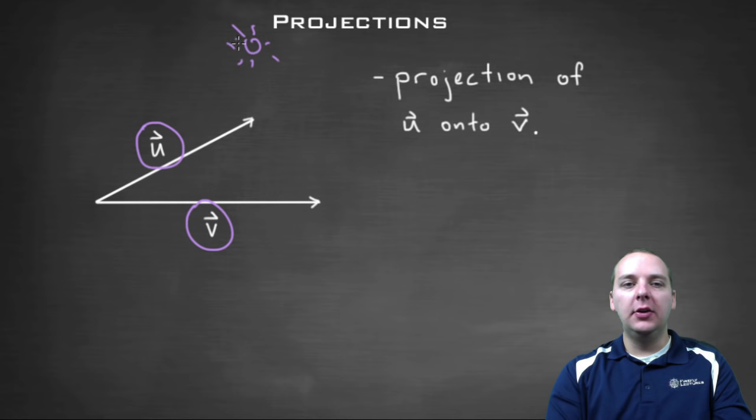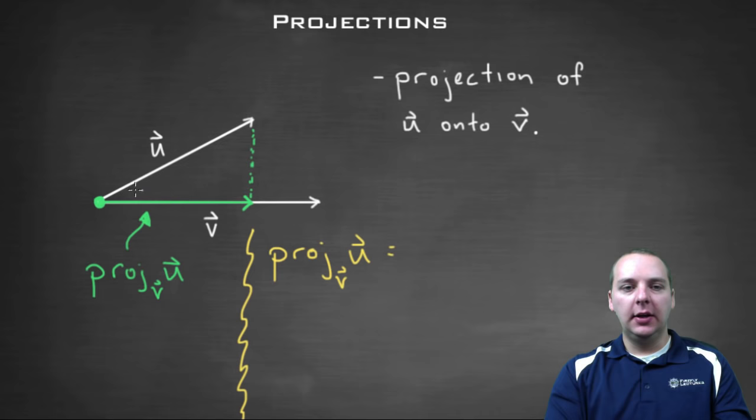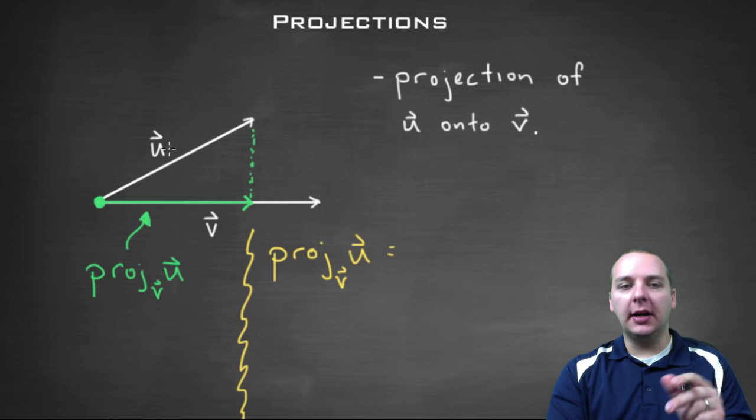do you notice how there would be a shadow that u leaves on v? So if you projected u onto v, it would wind up looking something kind of like this. Let me get rid of all these purple lines. It would look something kind of like this. Do you see the green vector? The green vector is what we call a projection. You're projecting u onto vector v.